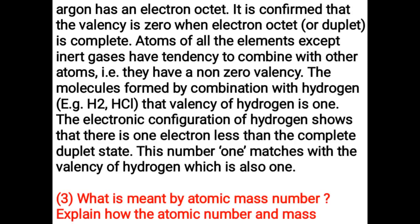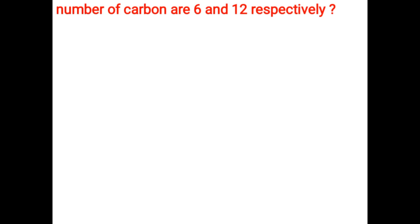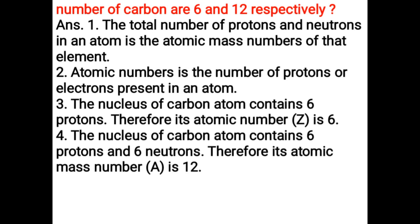What is meant by atomic mass number? Explain how the atomic number and mass number of carbon are 6 and 12 respectively. The total number of protons and neutrons in an atom is the atomic mass number. Atomic number is the number of protons or electrons present in an atom. The nucleus of carbon contains 6 protons, so its atomic number Z is 6. The nucleus contains 6 protons and 6 neutrons, so its atomic mass number A is 12.